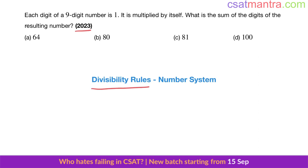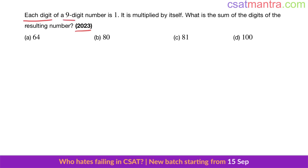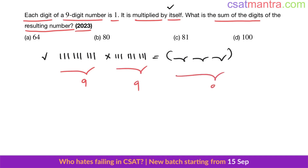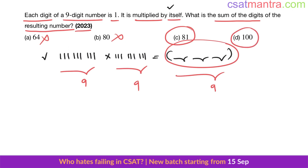This is a 2023 question based on divisibility rules from the number system chapter. Each digit of a nine-digit number is one. It is multiplied by itself — what is the sum of the digits of the resulting number? Since the sum of the digits of the original number is nine, it is divisible by nine. Both numbers are the same, so the result must also be divisible by nine. Among the options, 81 is divisible by nine, so that is our answer.